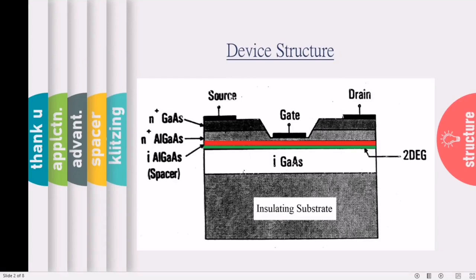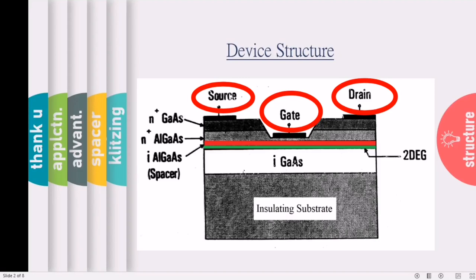It consists of source, drain and gate electrodes. These contacts are made up of metal layers commonly, or it can be fabricated using heavily doped gallium arsenide layers.